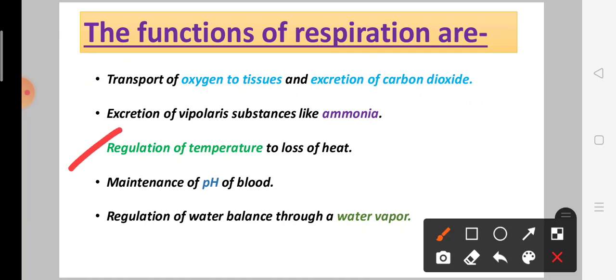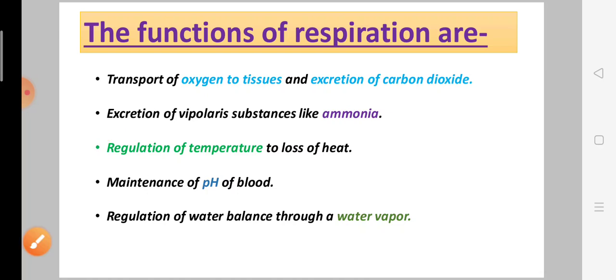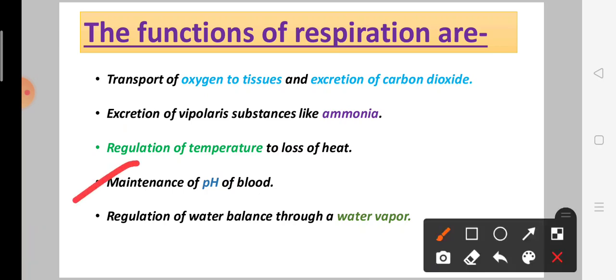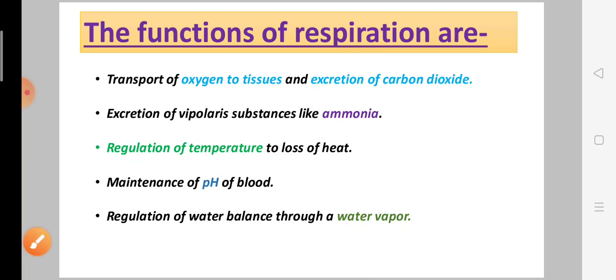Third is regulation of temperature through loss of heat — the respiration process helps our body regulate and maintain temperature. Fourth is maintenance of pH of blood — the pH level in our blood is maintained during respiration. Fifth is regulation of water balance through water vapor.